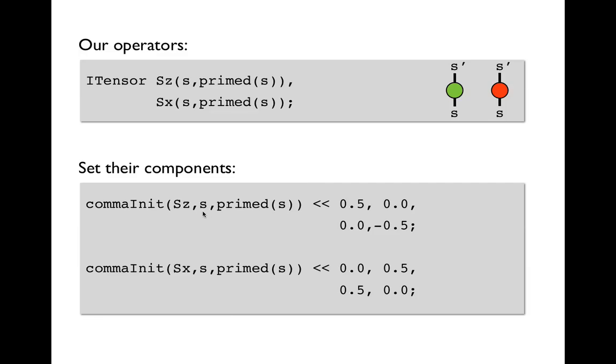We provide our tensor to be initialized, we give the order of the indices that we want the values on the right to correspond to, so we put the s first, meaning it's going to be the row index, and we put prime s second, which means it's going to be the column index. And then we just write the values out the way we would normally for a matrix. Now, here I've formatted it in a square, but notice it's really just a list of numbers separated by commas and terminated with a semicolon. And then we can do something similar for Sx.